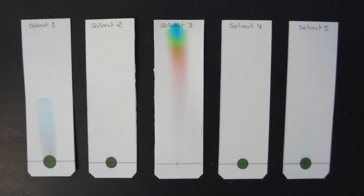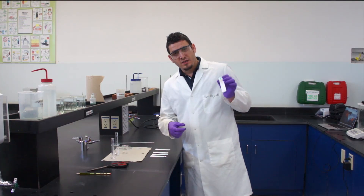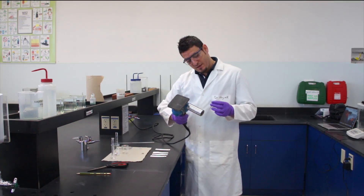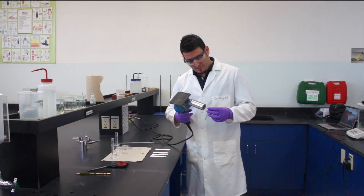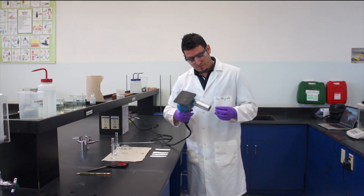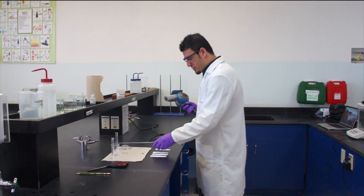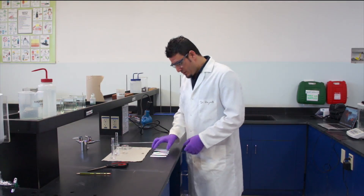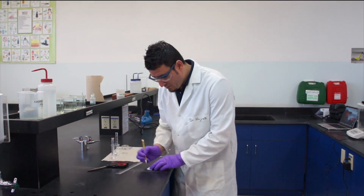After waiting enough time for the mixture to separate on the chromatography paper — and you'll notice there is only one solvent where the separation works perfectly — you need to dry your paper so the solvent does not migrate above the end line. Using a heat gun, dry your paper carefully. Once dried, you can identify where the end line is.